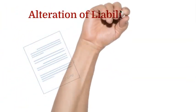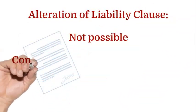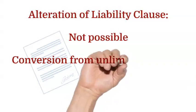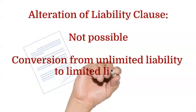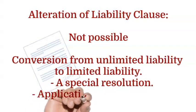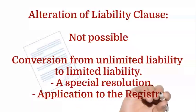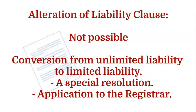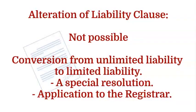Now we move on to alteration of liability clause. Generally, the company cannot alter its liability clause of its memorandum of association; such an alteration would be void in law. But if a company wants to convert itself from an unlimited liability company to a limited liability company, then it shall pass a special resolution and make an application to the registrar. If the registrar is satisfied, he will close the former registration and issue a certificate of incorporation as if it were the first registration.